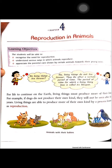For life to continue on earth, living things must reproduce more of their kind. For example, if dogs do not produce their own kind, they will not be seen after some years. For all living things to continue on earth, they must reproduce.